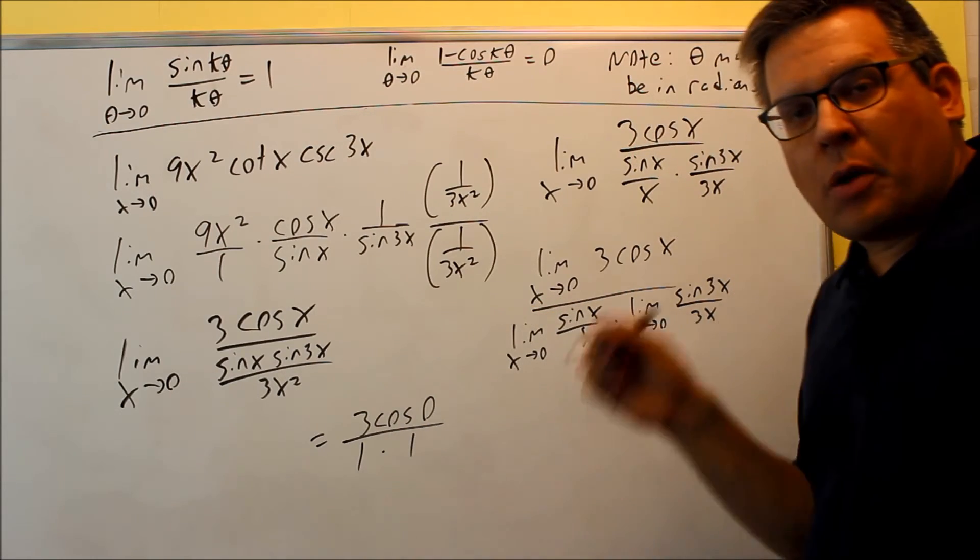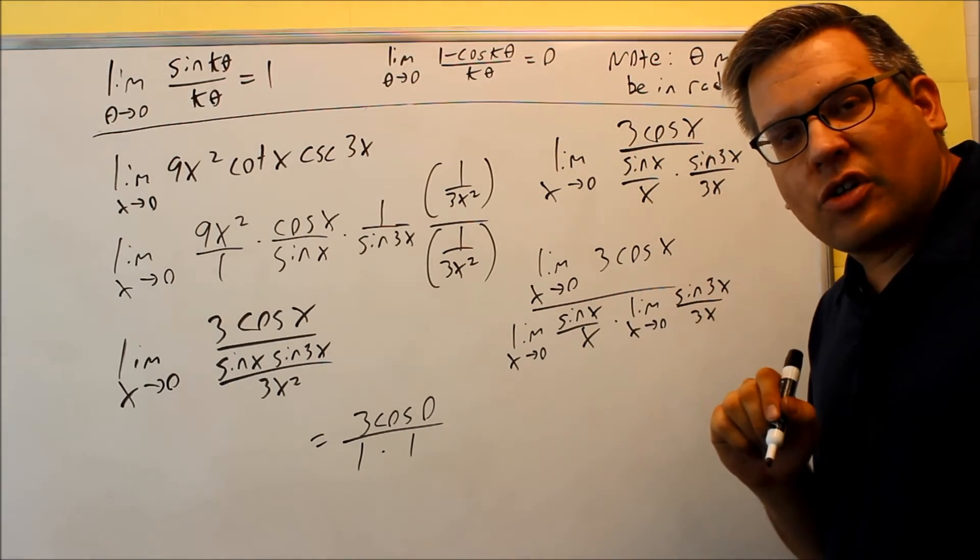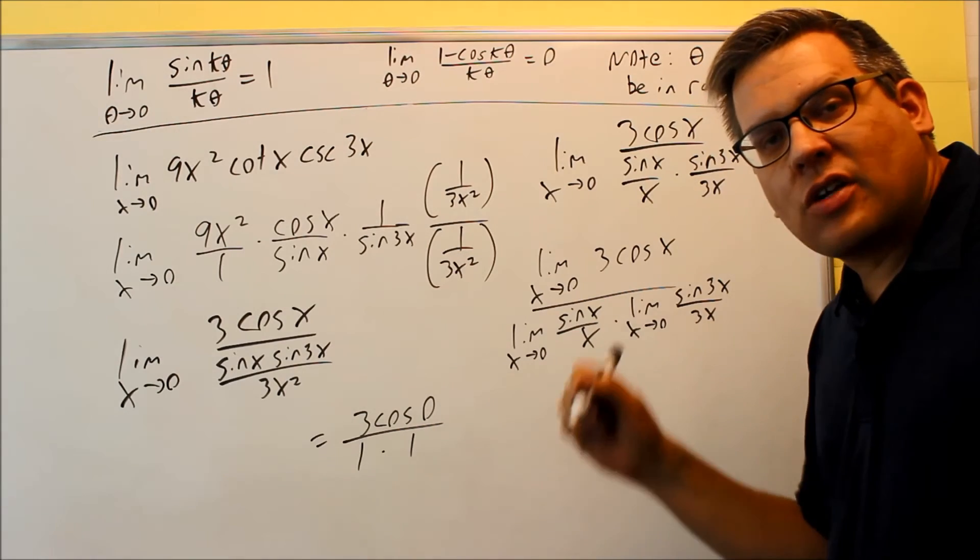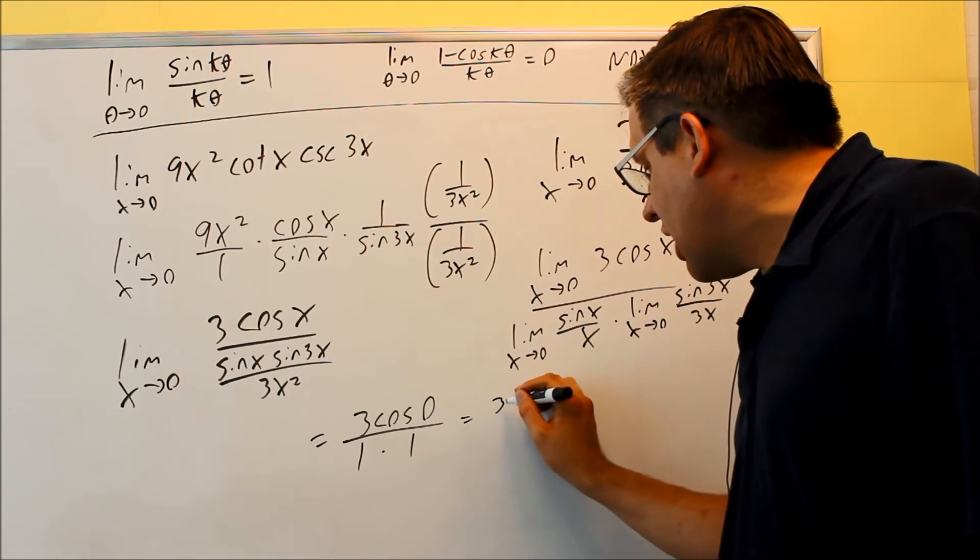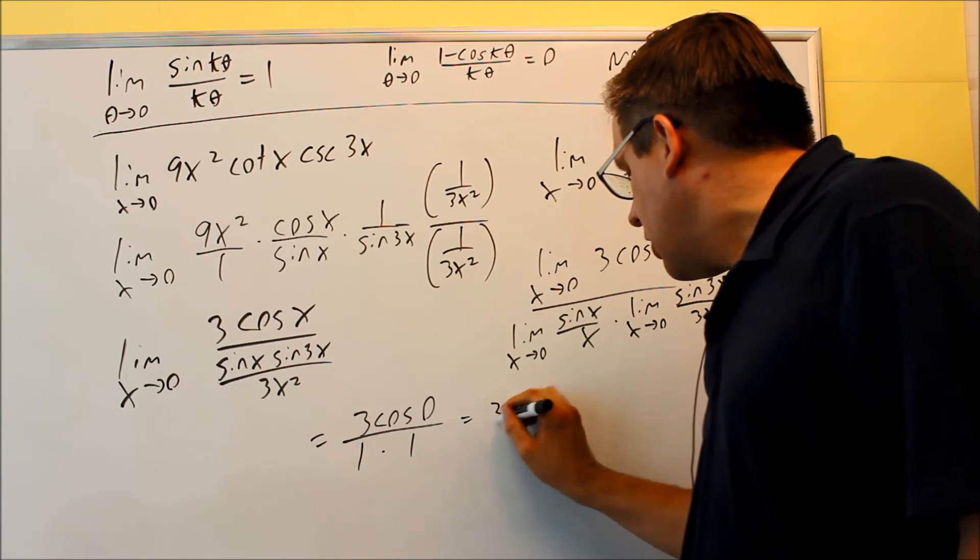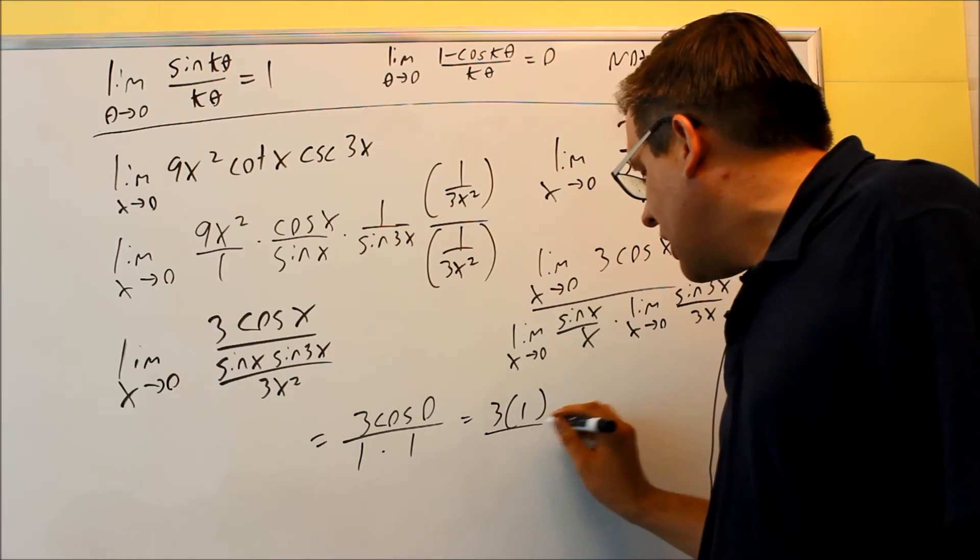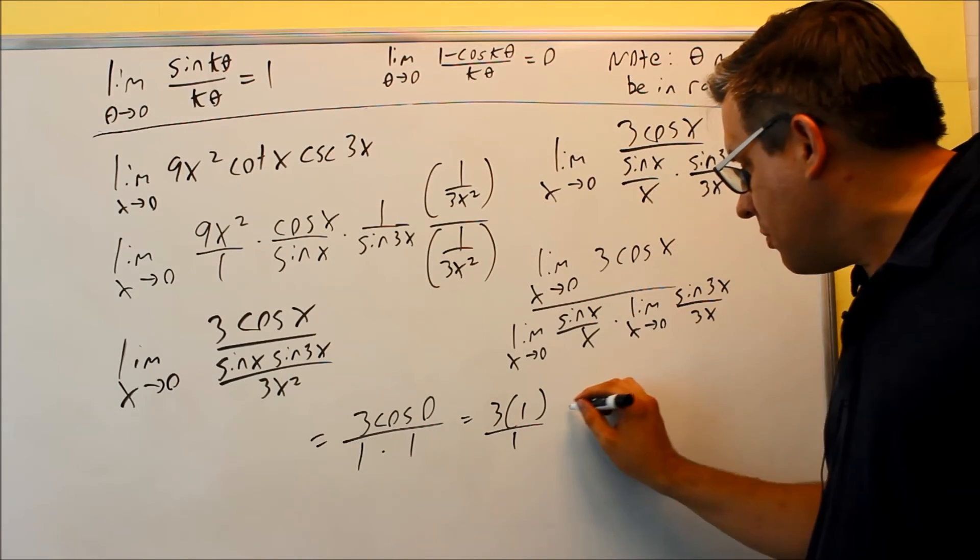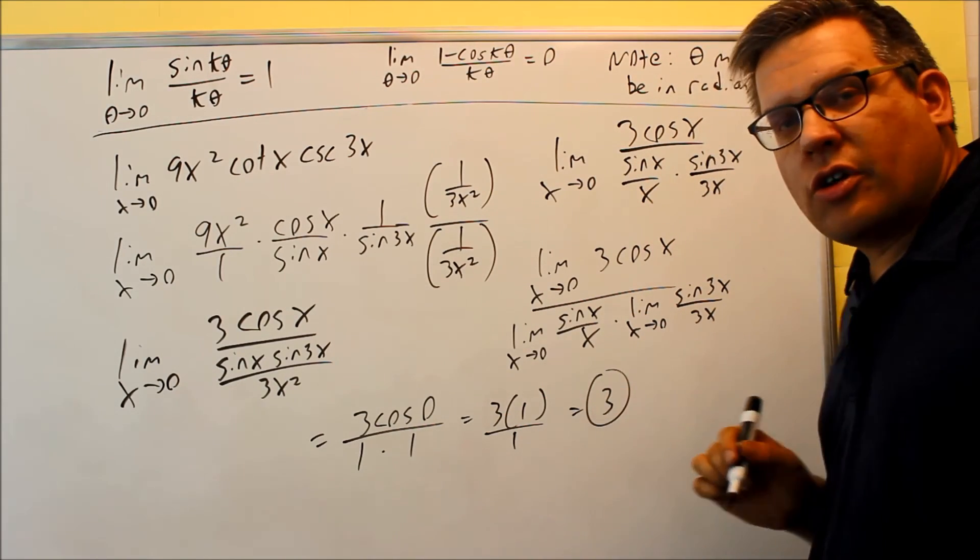Cosine of 0. Got to remember back with the unit circle. Cosine of 0 the x value at 0 degrees. That's going to be 1. So I have on top 3 times 1. On the bottom 1 times 1 is 1. Your final answer is going to be 3.